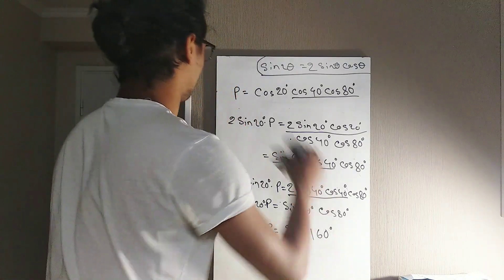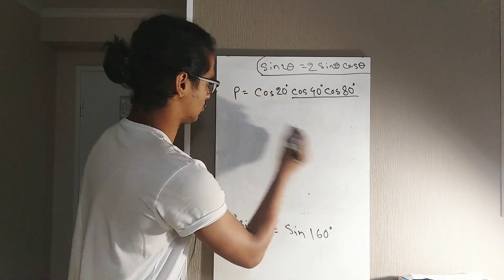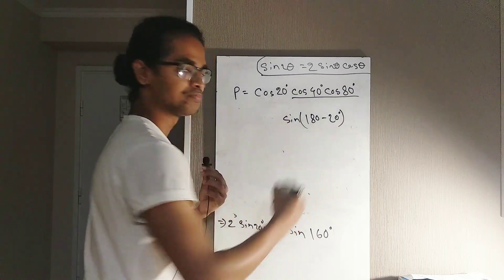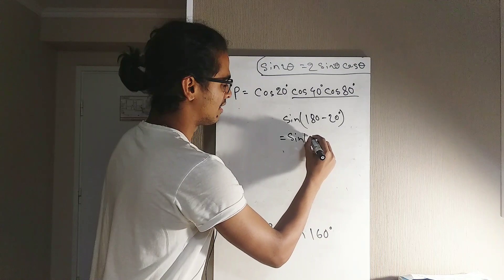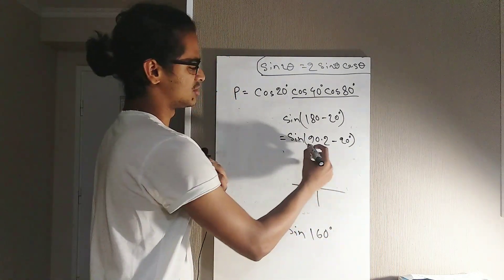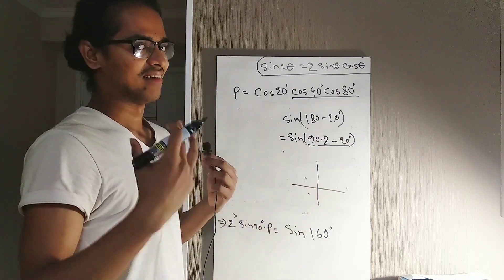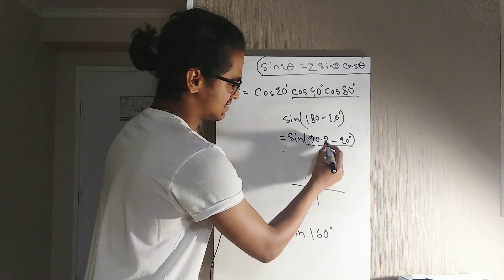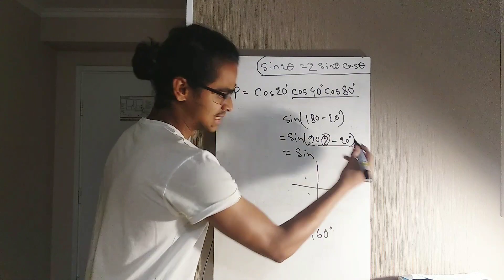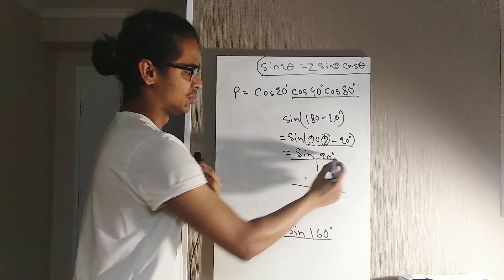Now, what is sin 160°? I can write sin 160° as sin(180° − 20°), which equals sin(90° × 2 − 20°). This angle is in the second quadrant since it's less than 180°. In the second quadrant, sine is positive, and since 90° is multiplied by an even number, we still have sine. So sin 160° = sin 20°.